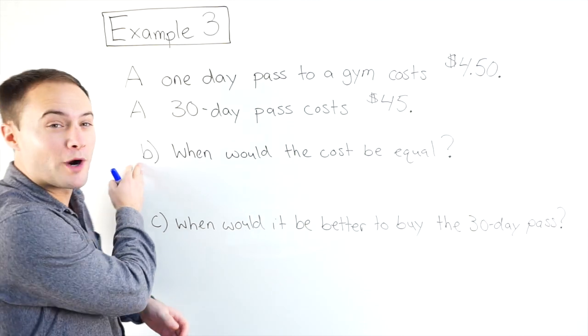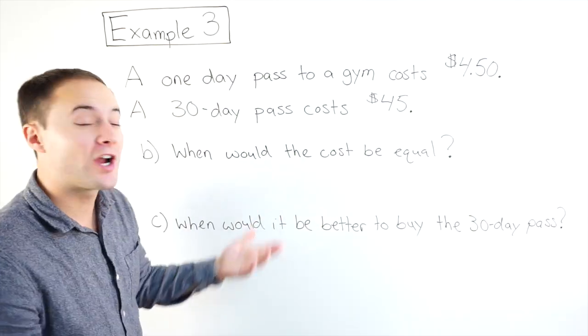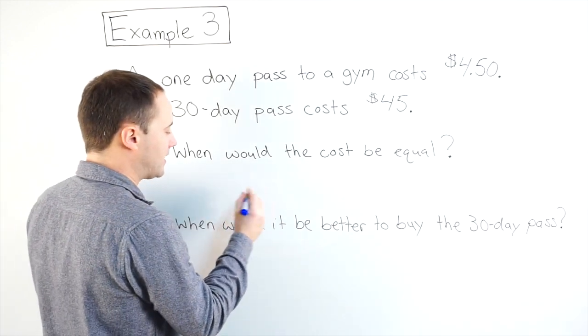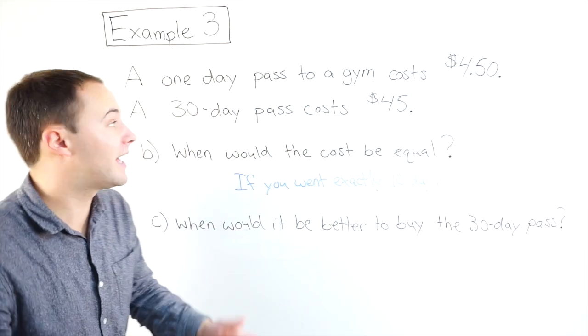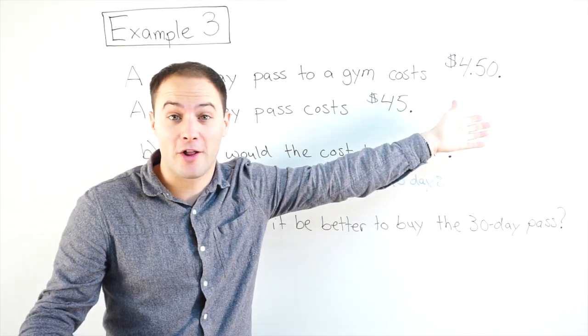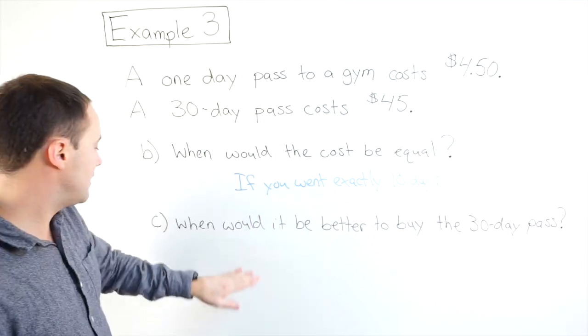Okay, same problem. We're just going to do part B and part C. When would the cost be equal? The cost would be equal if you went exactly 10 days. If you went 10 days, 10 times $4.50 would be $45. If you went 10 days with a month pass, well, it's still $45. And last one, when would it be better to buy the 30 day pass?